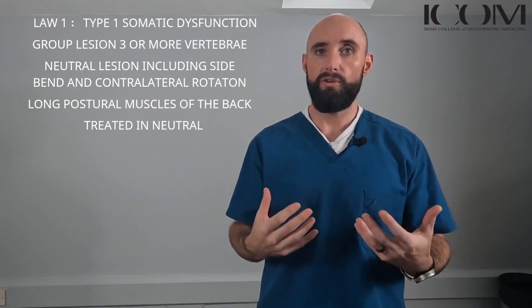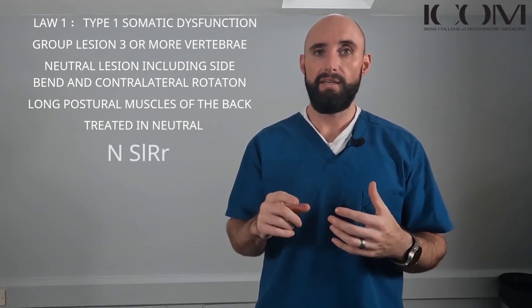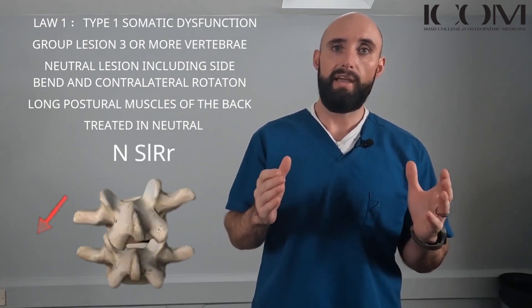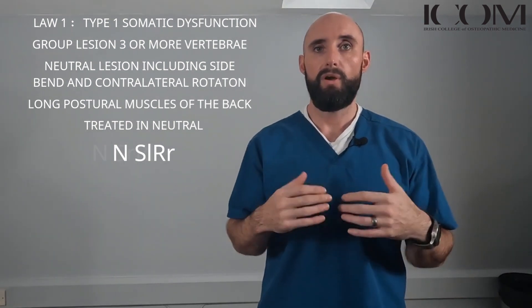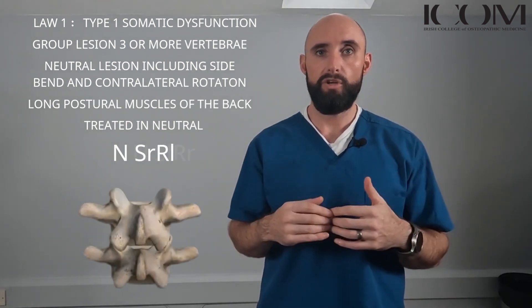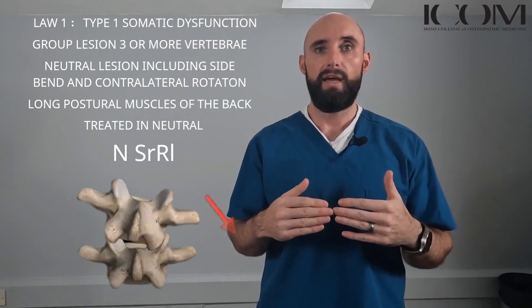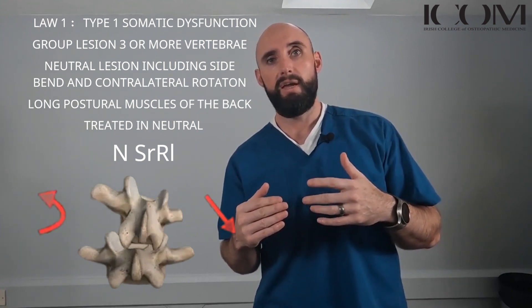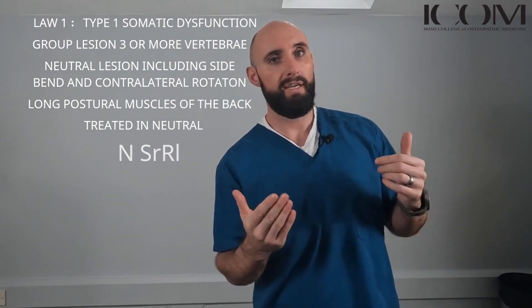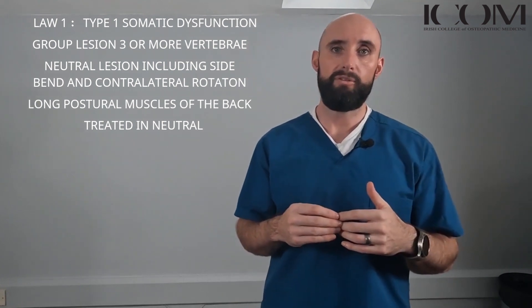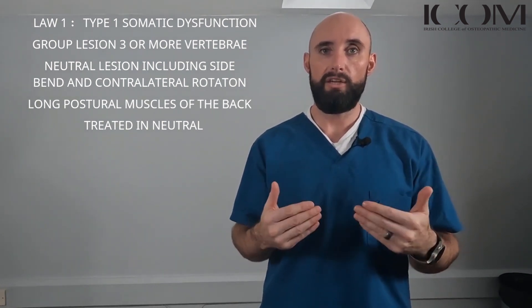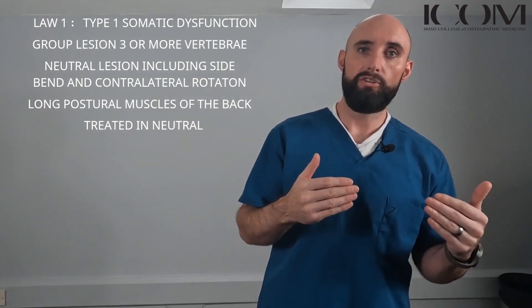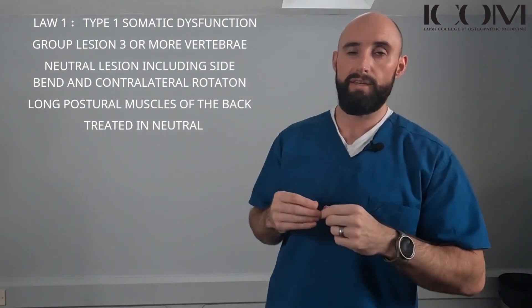For example, one of the equations we could use for this would be N, SL, RR — neutral, side bend left, rotate right. Or in opposition it could be N, SR, RL — neutral, side bend right, rotate left. So again, it's a neutral lesion that side bends one direction and rotates to the opposite side.